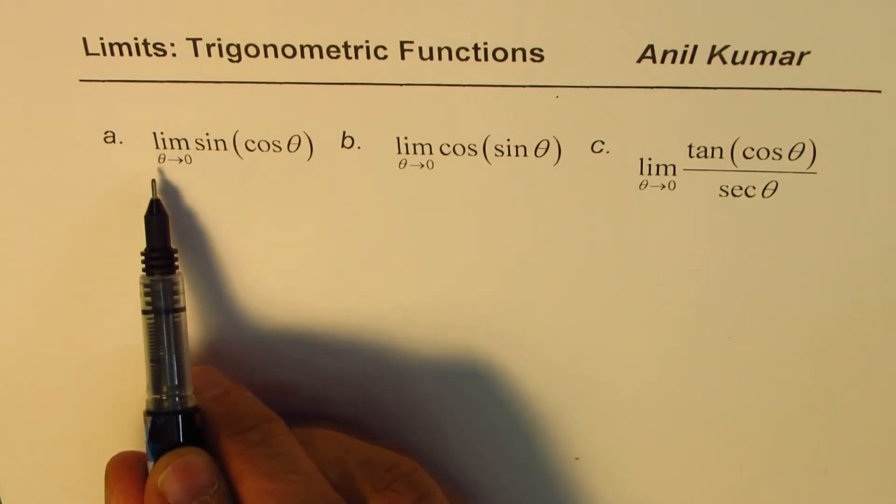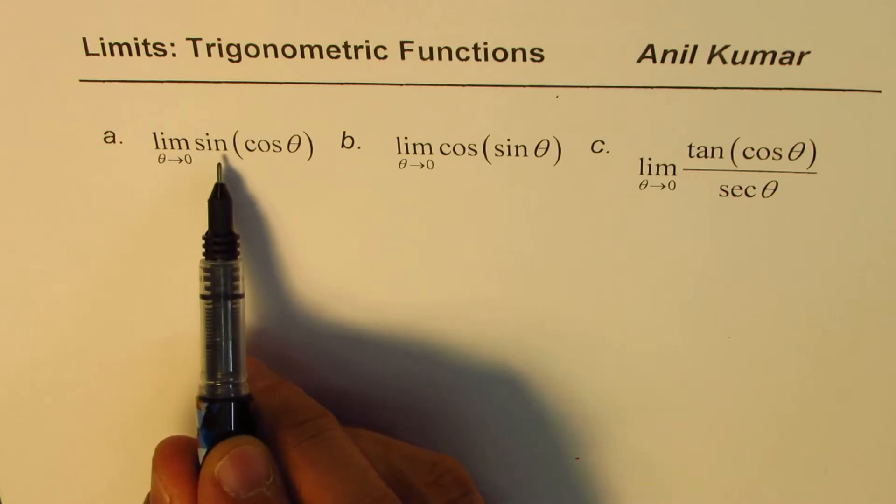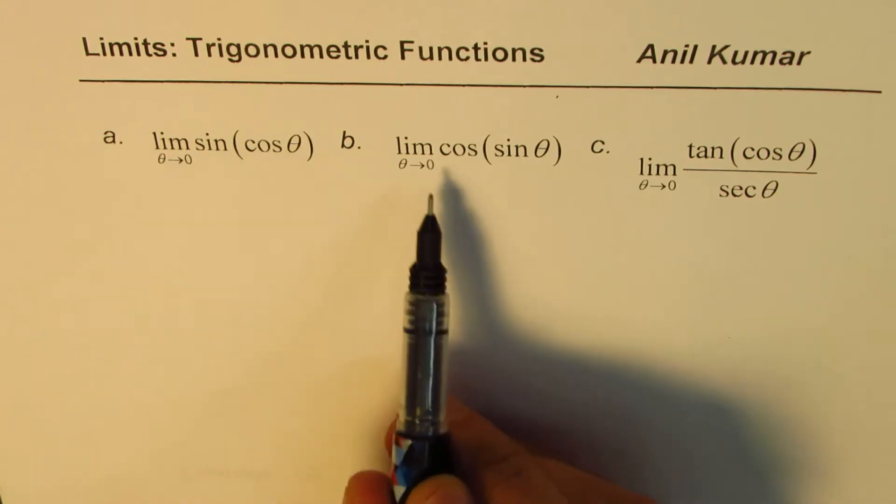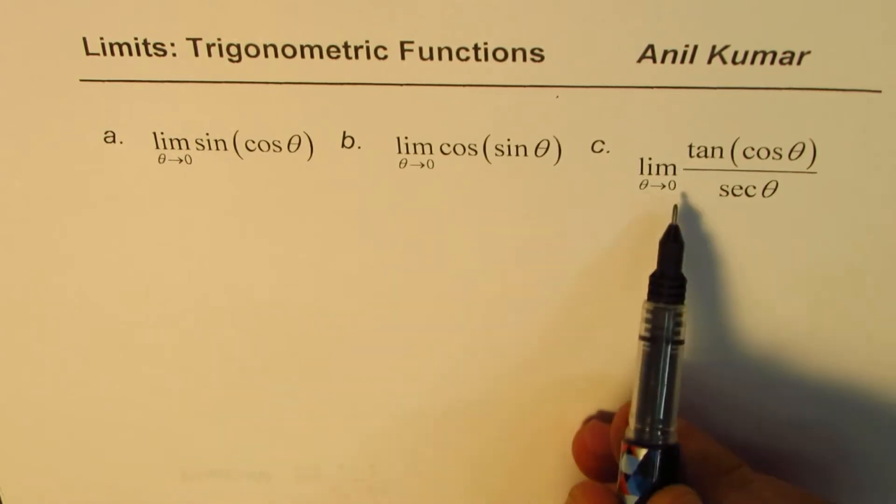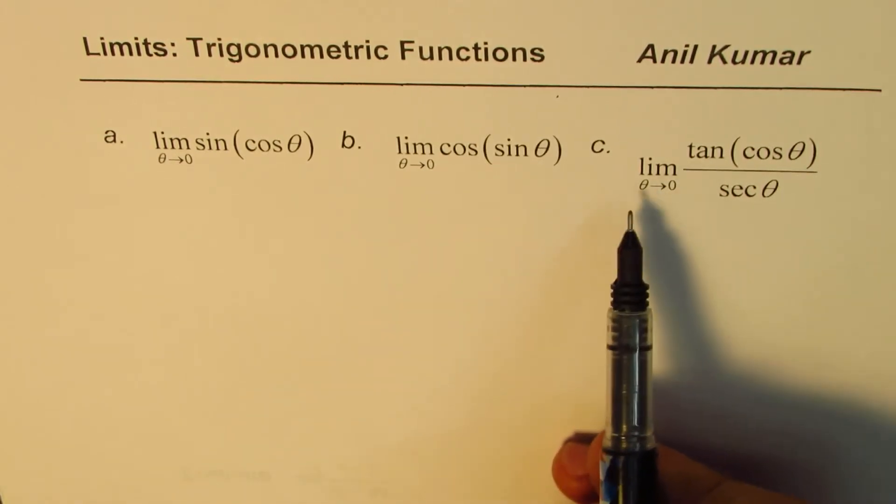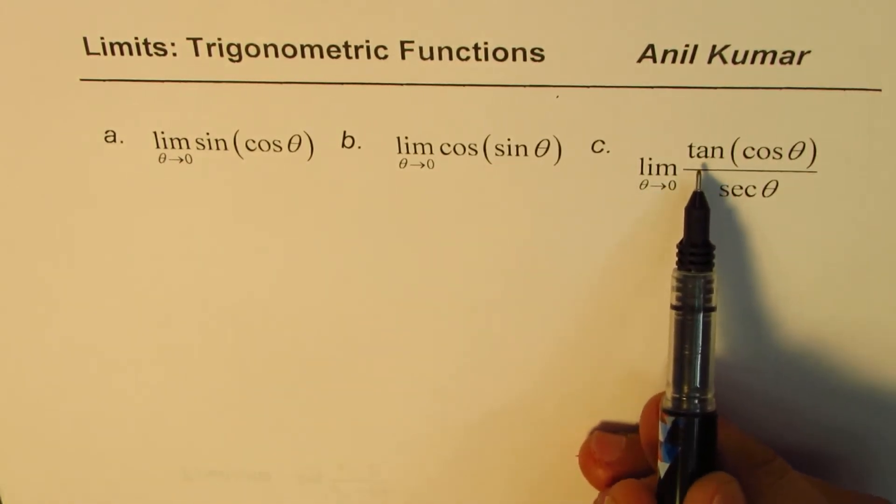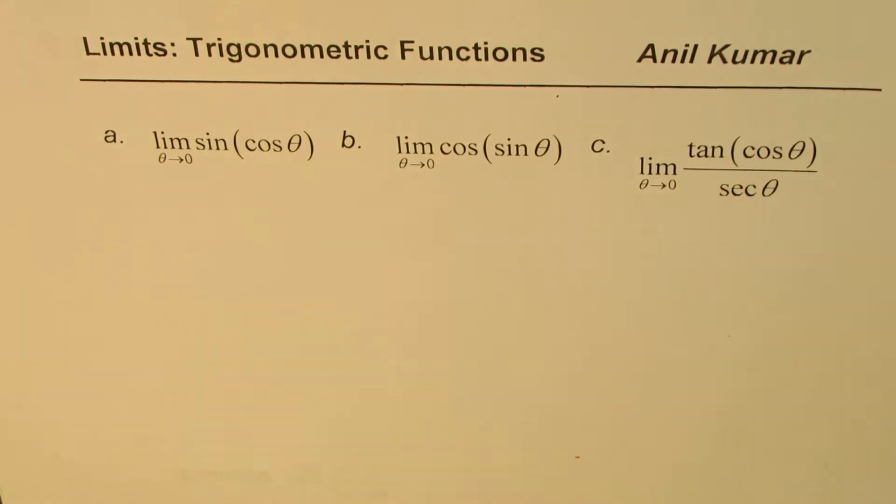The first one is limit when theta approaches 0 for sine of cosine theta. The next one is limit when theta approaches 0, cos of sine theta. And the last one here is limit theta approaches 0, tan cos theta divided by secant theta.